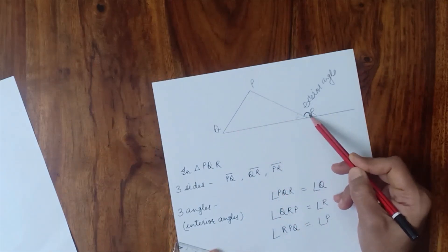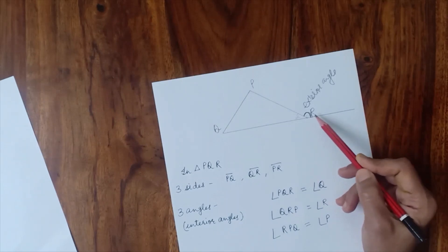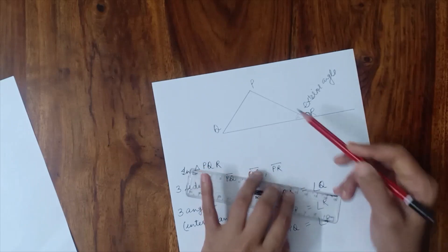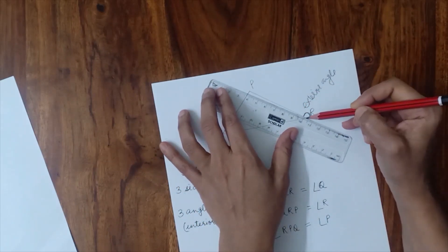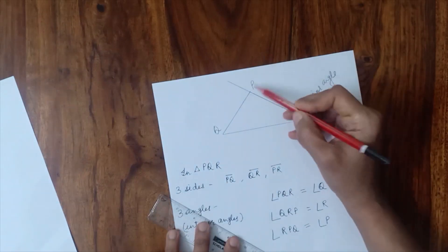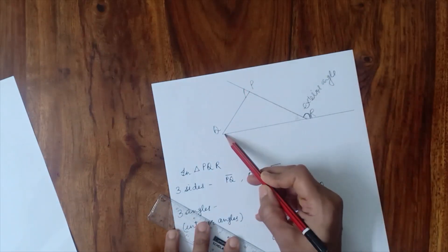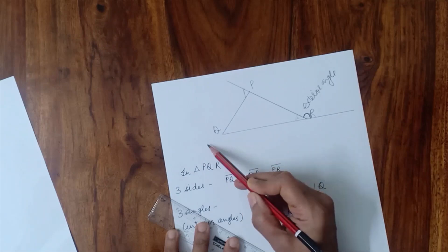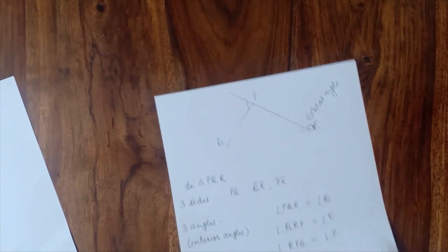You can extend any side. Here I extended QR, and if you extend RP or PQ, another exterior angle will be formed. So in a triangle, three exterior angles can be formed. For example, extending side PR forms one exterior angle, and extending QP forms another.